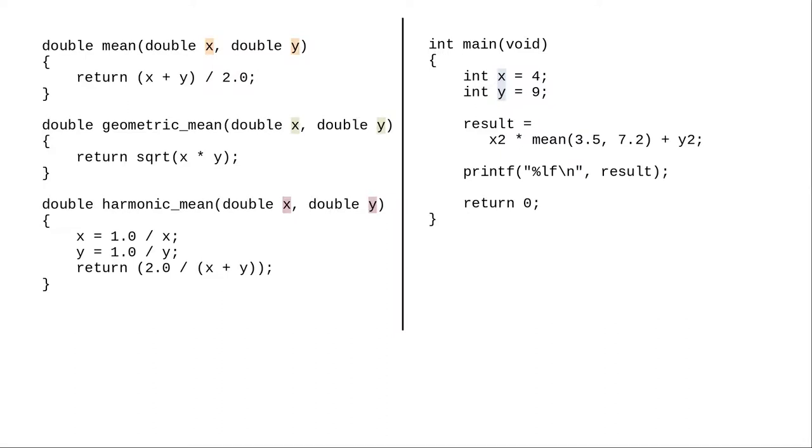There's another advantage of parameters and local variables. I can give these functions to anyone else to use, and I don't have to worry if they have variables of their own named x and y. In this example, the x and y in main can't and won't interfere with my parameters x and y in the functions.